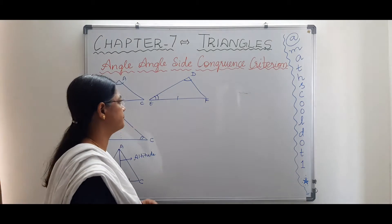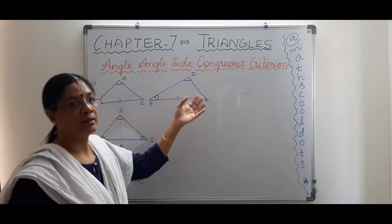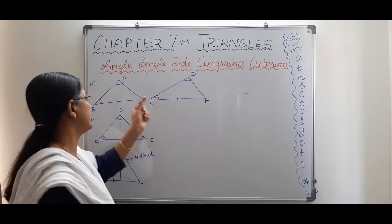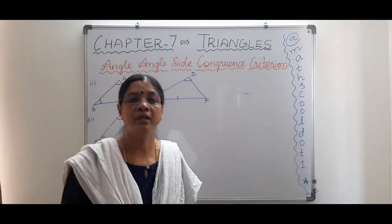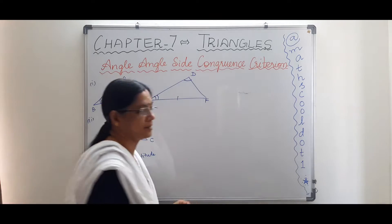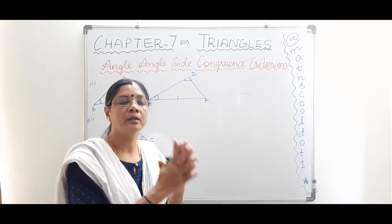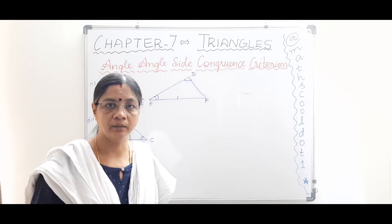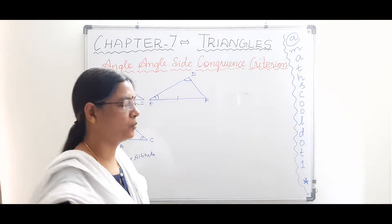What does AAS mean? If you are given two triangles — one is ABC and another is DEF — and angle B equals angle E, angle A equals angle D, and side BC equals EF, we need to prove both triangles are congruent. To understand the criterion: if any two angles and one corresponding side of one triangle are equal to the other correspondingly, then we can say the triangles are congruent.